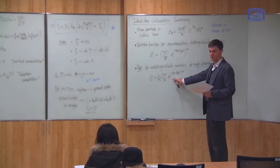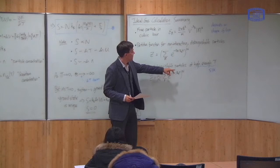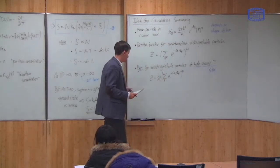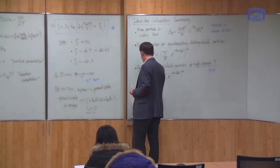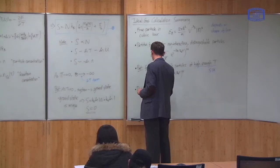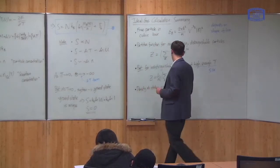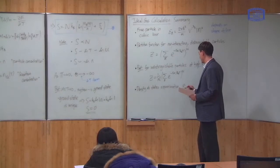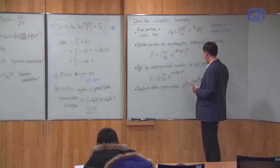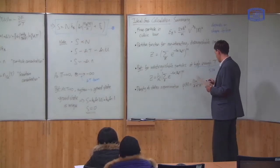Next, we had to evaluate this sum. But, you can't evaluate this sum exactly, because this energy ε goes like n², so you get a sum of n e to the minus n². You can't do that exactly. So, we used the density of states approximation, where you replace the sum by an integral. And this is what we did last week.